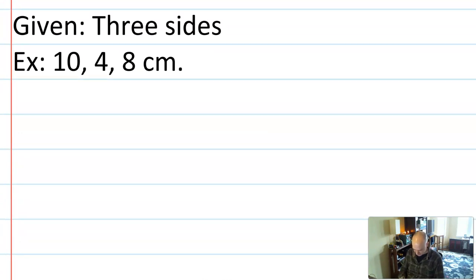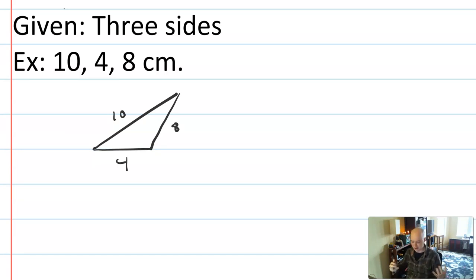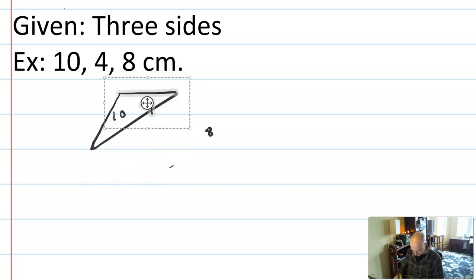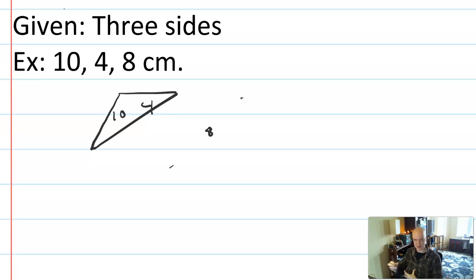Say that I was given three sides of 10, 4, and 8 centimeters. If you imagine this being made out of sticks or rods, this would be completely rigid. There would be no way to pick up the 8-centimeter side and move it in such a way that it made a different triangle. Even if you pick up the other sides, you've just rotated the triangle — it would have the same angles as before. So three sides is not an ambiguous case; it's totally rigid.